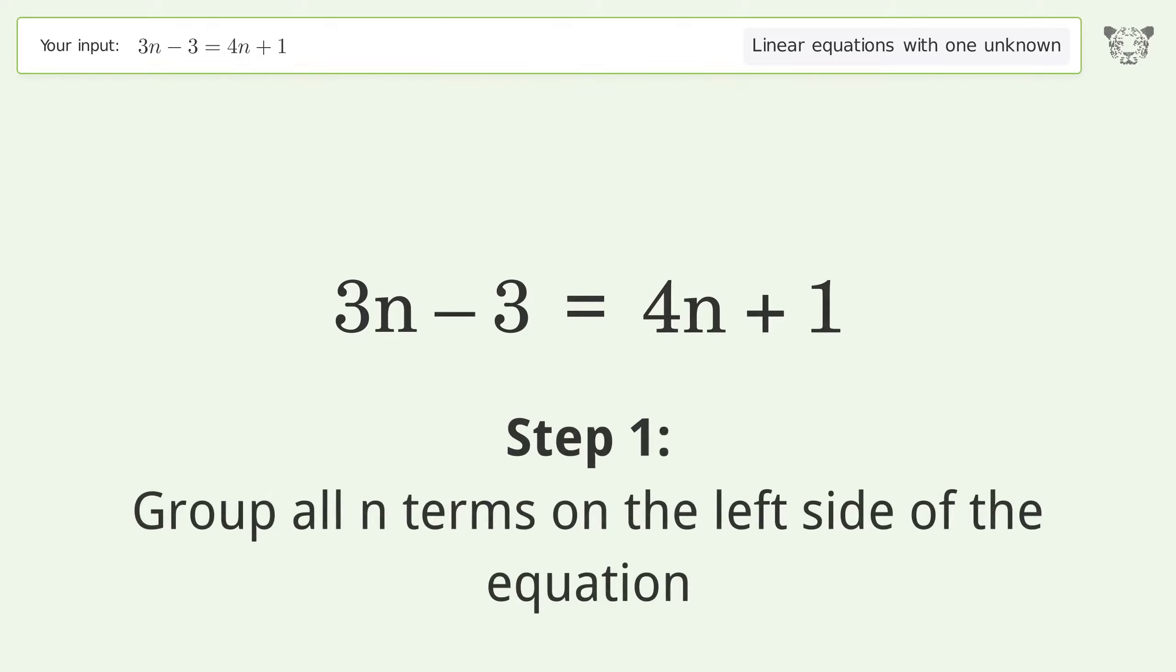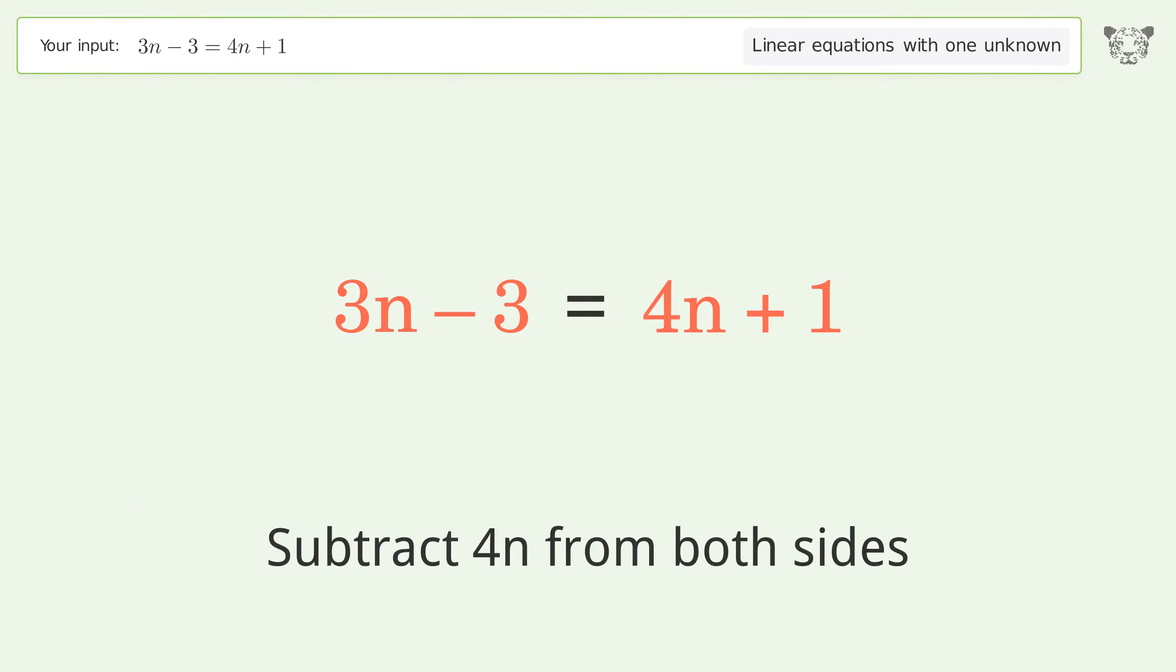Group all n terms on the left side of the equation. Subtract 4n from both sides.